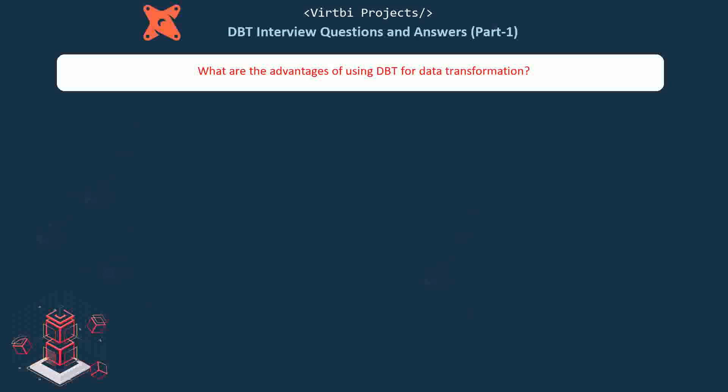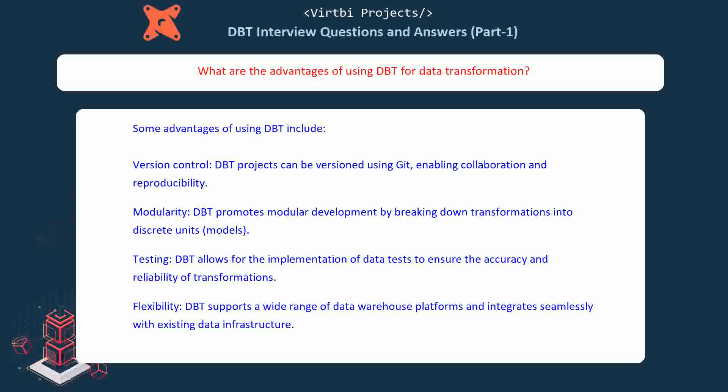What are the advantages of using dbt for data transformation? Some advantages include: Version control — dbt projects can be versioned using Git, enabling collaboration and reproducibility. Modularity — dbt promotes modular development by breaking down transformations into discrete units called models. Testing — dbt allows for data tests to ensure accuracy and reliability. Flexibility — dbt supports a wide range of data warehouse platforms and integrates seamlessly with existing data infrastructure.